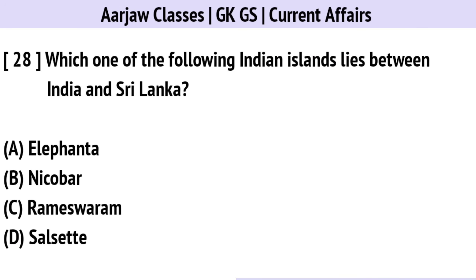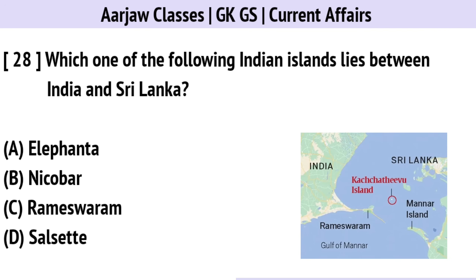Which one of the following Indian islands lies between India and Sri Lanka? Correct option is C — Rameshwaram.